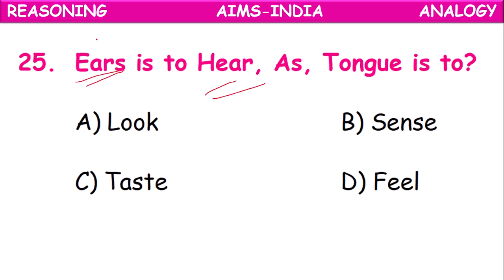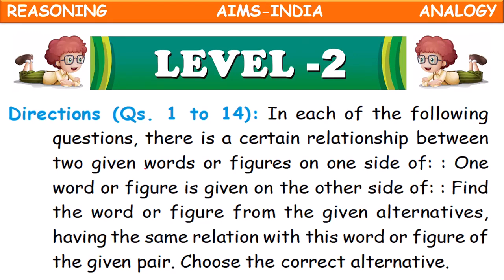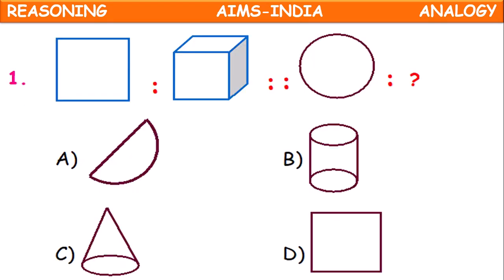Ears is to hear — the purpose of ears is to hear. Then what is the purpose of tongue? Tongue is to taste. Next, some level two questions: rectangle is to cube — a cube is made from a rectangle. Then a circle is used to make a cylinder. If a cube is made with a rectangle, then a cylinder is related with a circle.